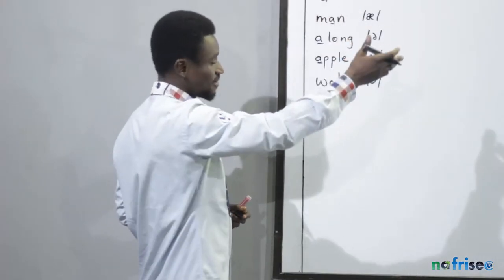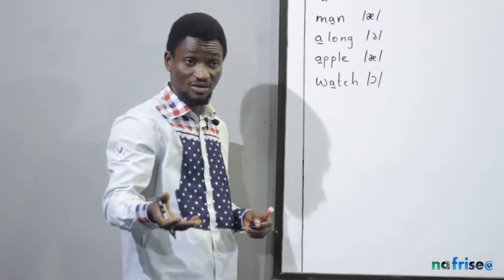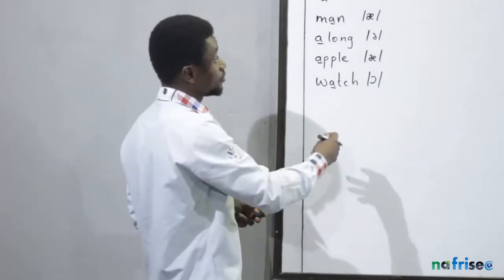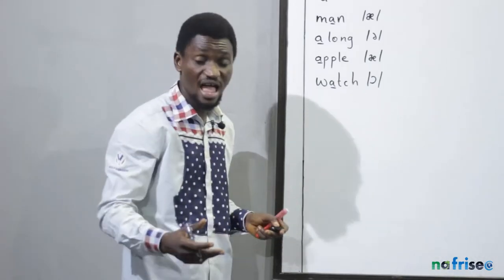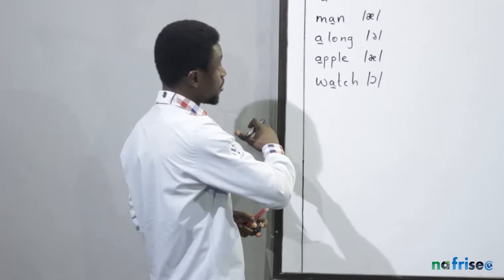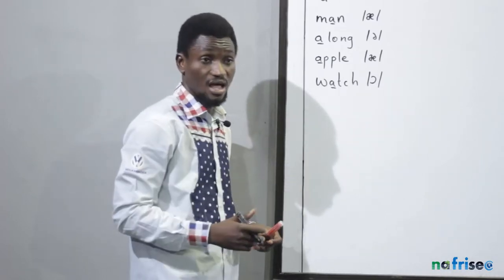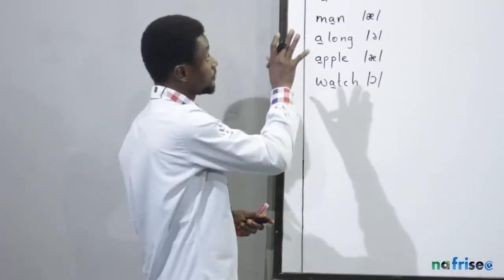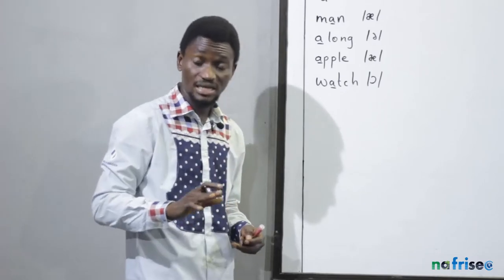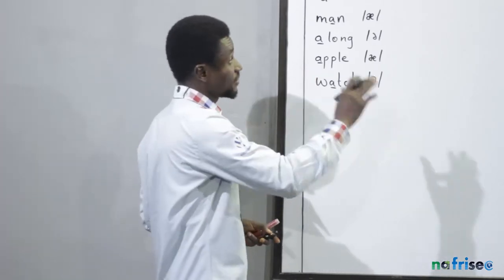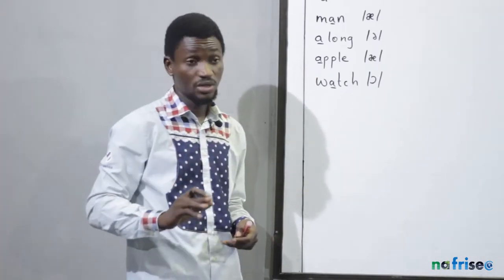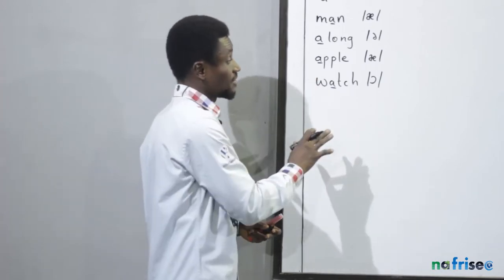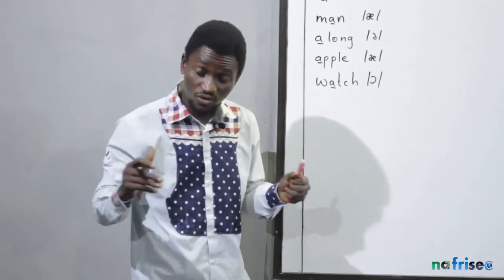The 26 letters can produce up to 44 sounds. We've got the vowel and the consonant sounds. The vowel sounds are 20 in number, and the consonant sounds are 24 in number.